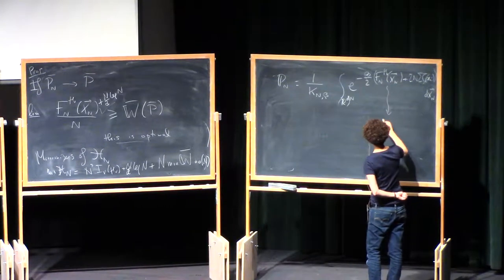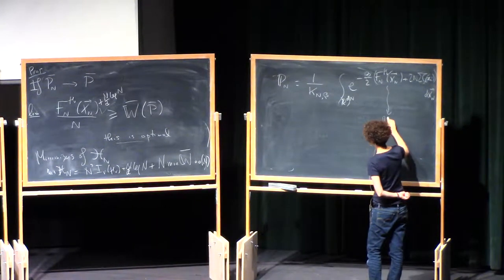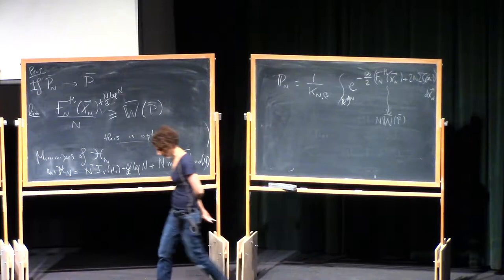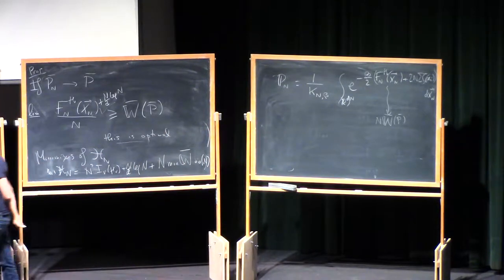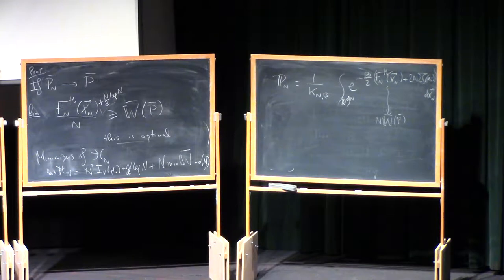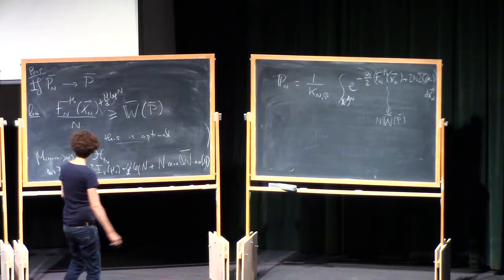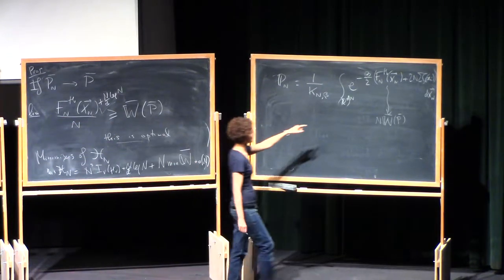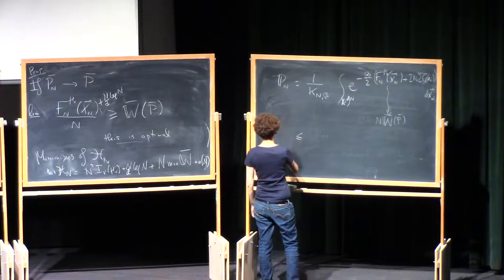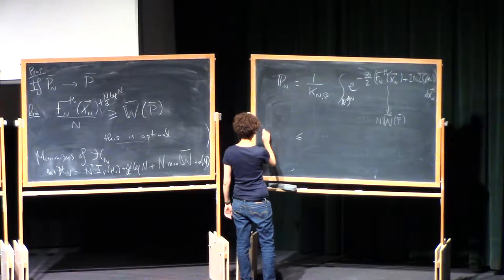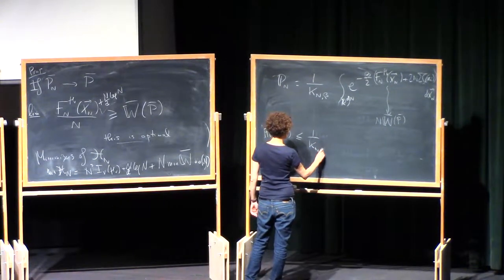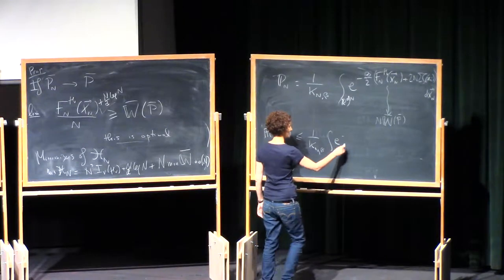So we're tempted to plug in here n W_bar of P_bar. Showing that this is legitimate is essentially the question of proving the large deviation principle. Since we have a lower bound, we will always have an upper bound here because there is a minus sign, so I can always bound from above. If I look at the probability of something, I can always write a bound from above by exponential minus blah blah.